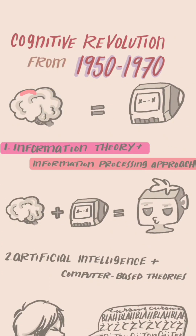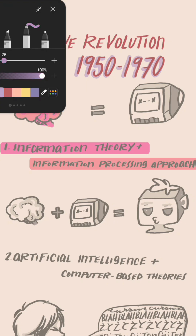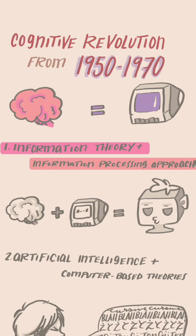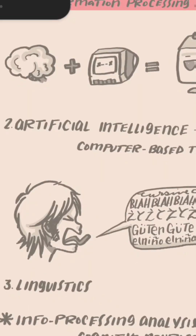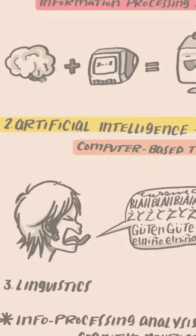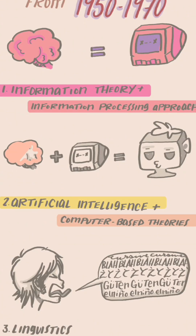Information theory is an abstract way of analyzing the processing of information. This piece of cognitive psychology typically deals with memory and perception, and how we encode the world around us.